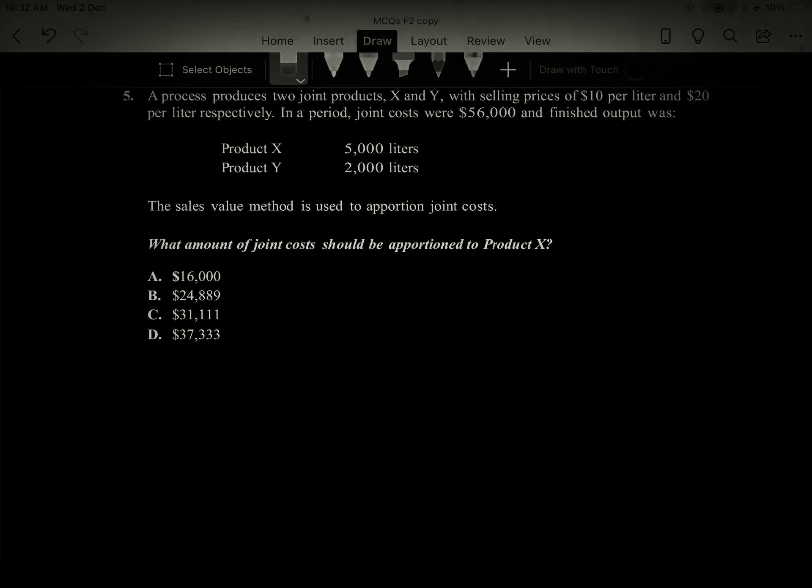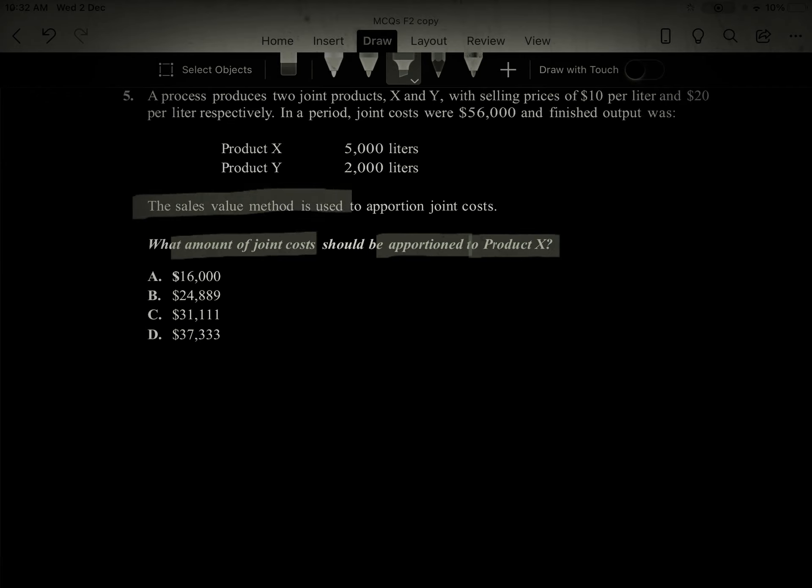So this is a joint by-product question. We have to note what is the first requirement - the amount of joint cost. Joint cost is the amount which we have to apportion. Joint cost is $56,000, prices are given for both products, and total units are given.